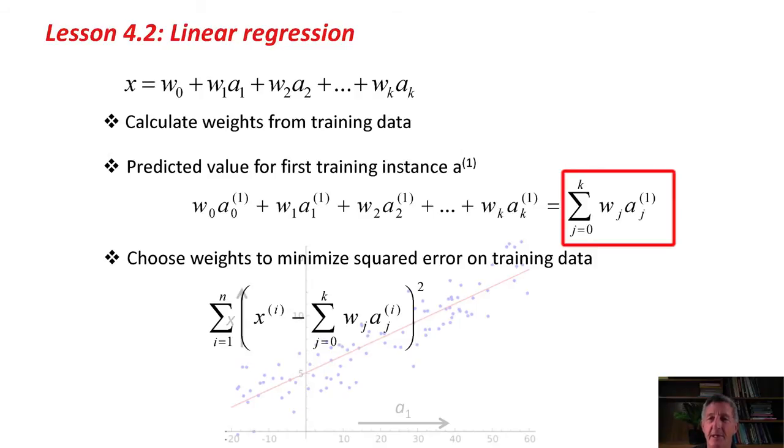Notice that we're defining a0, the zeroth attribute value, to be 1. That just makes this formula work. For the first training instance, it might be this one here, that gives us this number x, the predicted value for the first training instance and this particular value of a1.